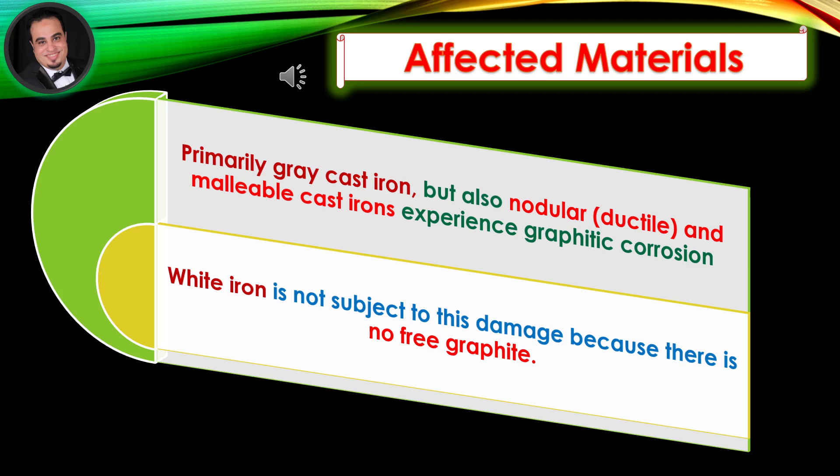Affected materials: Primarily gray cast iron, but also nodular, ductile, and malleable cast irons experience graphitic corrosion. White iron is not subject to this damage because there is no free graphite.